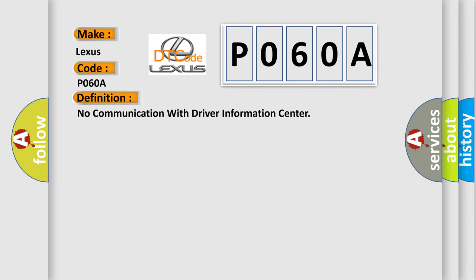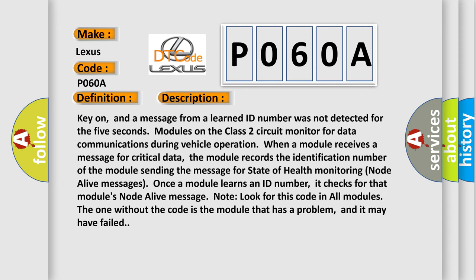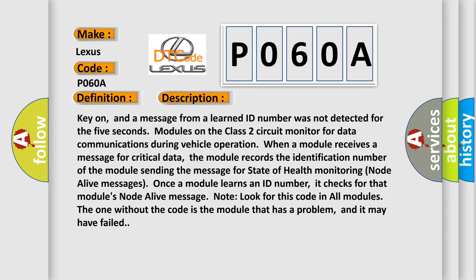The basic definition is: no communication with driver information center. With the key on, a message from a learned ID number was not detected for five seconds. Modules on the Class 2 circuit monitor data communications during vehicle operation. When a module receives a message for critical data, it records the identification number of the sending module for state-of-health monitoring. Once a module learns an ID number, it checks for that module's node alive message. Look for this code in all modules — the one without the code is the module that has a problem and may have failed.